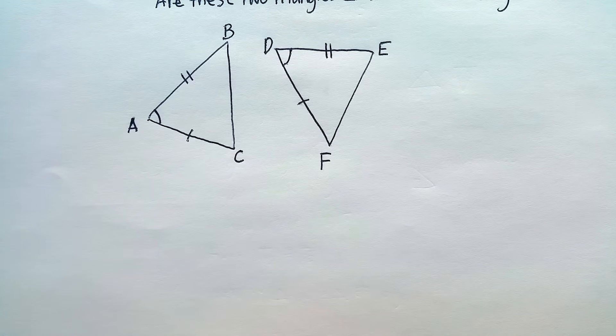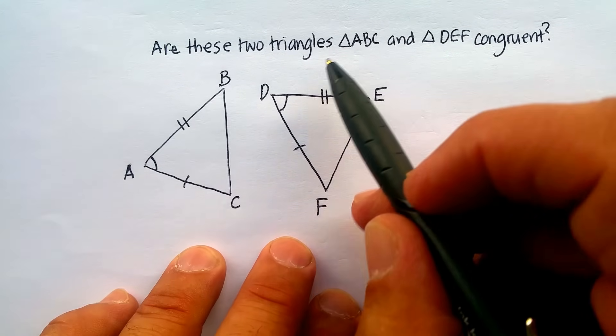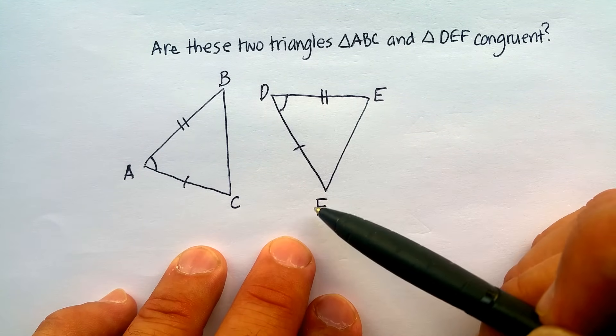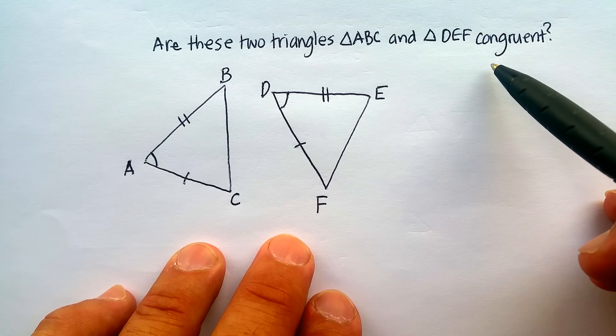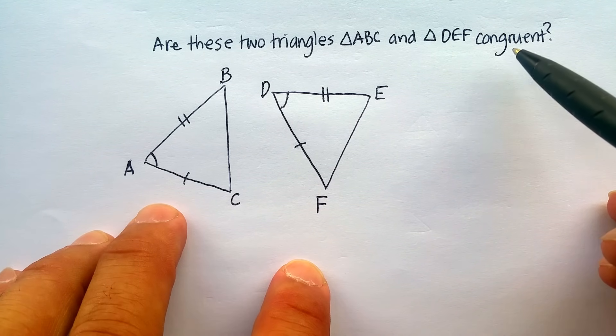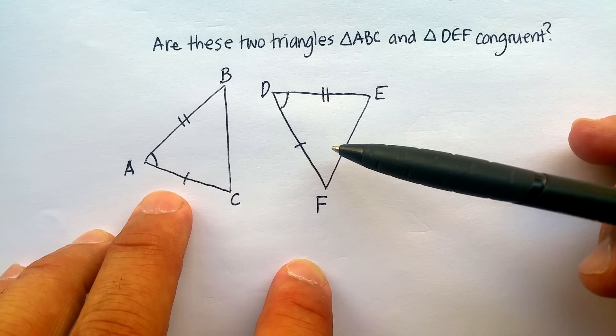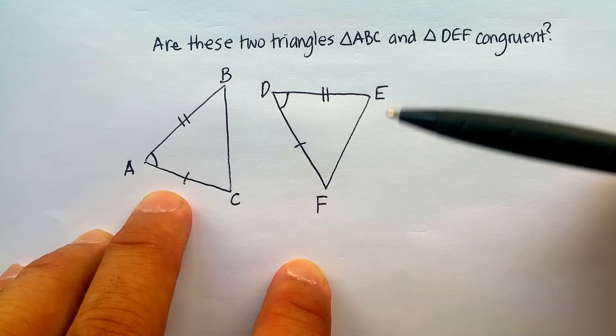So the question is this, are these two triangles, triangle ABC and triangle DEF, are they congruent? And if so, write a congruency statement that proves this. Now I'm given a few things already, right?